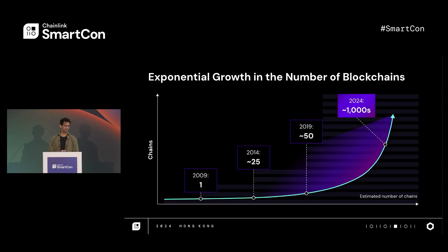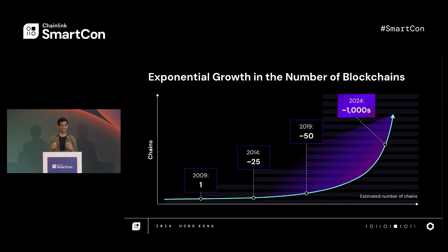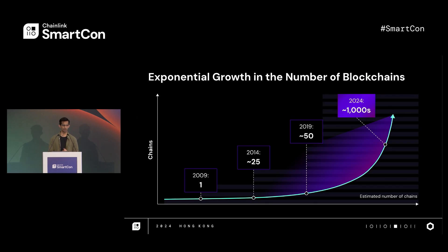Today, the space is not in tens of chains or hundreds of chains. The space has grown to be thousands of chains, and that is split between public chains and private chains. The goal for CCIP has been and continues to be to be the secure standard to connect all of those chains.